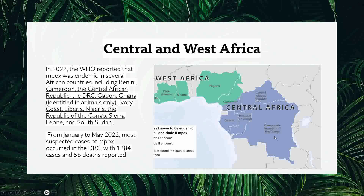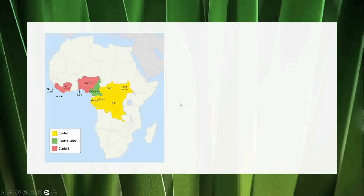The endemic countries in central and west Africa include the Democratic Republic of Congo, Republic of Congo, Gabon, Cameroon, Central African Republic, Nigeria, Ghana, South Sudan, Ivory Coast, Liberia, Sierra Leone, and Lyon. As you can see, this is the central and west Africa region where monkeypox has been endemic since 1970.